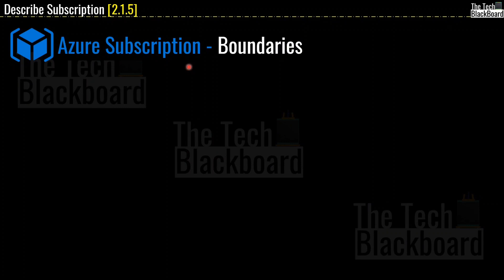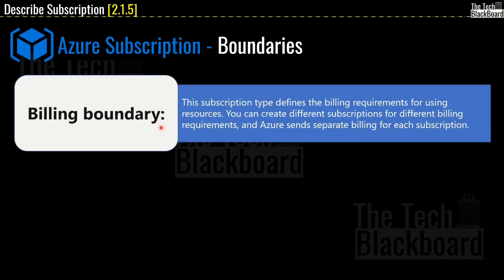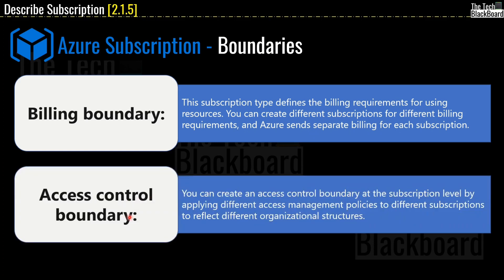Now let's understand Azure subscription boundaries — there are two types. The first is the billing boundary: this subscription boundary type defines the billing requirement for using the resources. You can create different subscriptions for different billing requirements, and Azure will send a separate bill for each subscription. The second is the access control boundary: you can create an access control boundary at the subscription level by applying different access management policies to different subscriptions to reflect a completely different organizational structure.